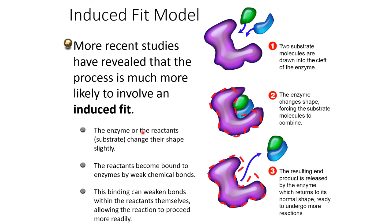The enzyme or the reactants change their shape slightly. The reactants become bound to the enzyme by weak chemical bonds. This binding can weaken bonds within the reactants themselves, allowing the reaction to proceed more readily.